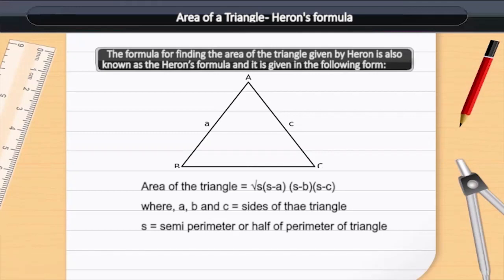Where A, B and C are sides of the triangle and S is the semi-perimeter or half of perimeter of the triangle, that is equal to A plus B plus C divided by 2.